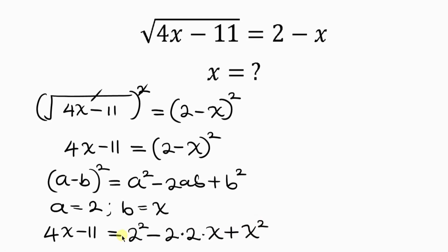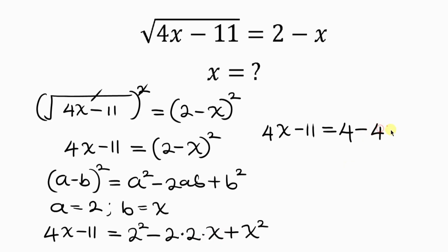Simplifying further, we have the left-hand side as 4x minus 11, equal to: 2 squared is 4, minus 2 times 2 times x is 4x, and then plus x squared.